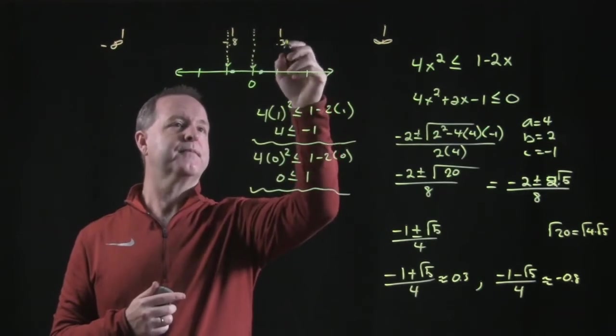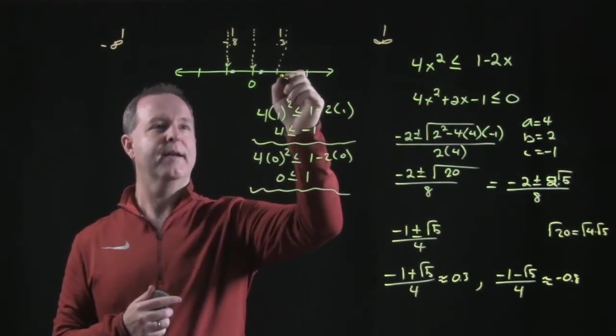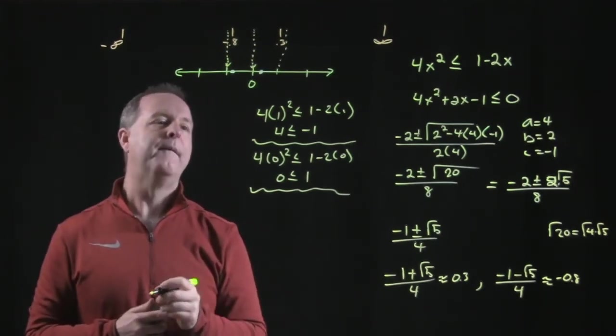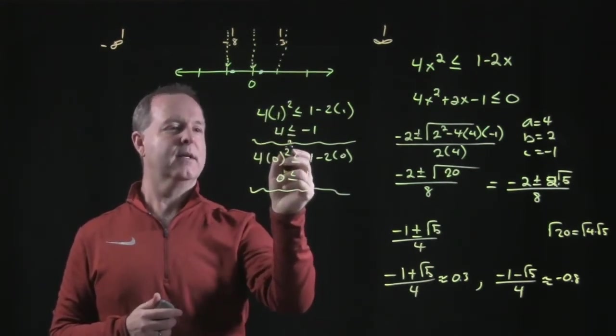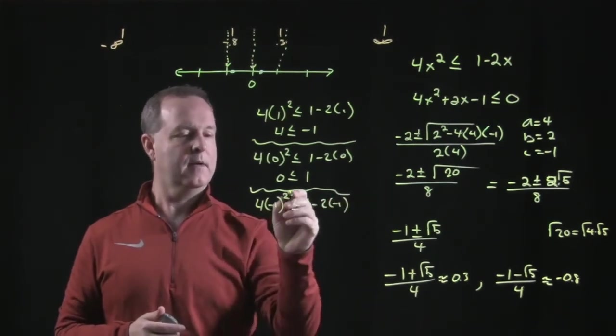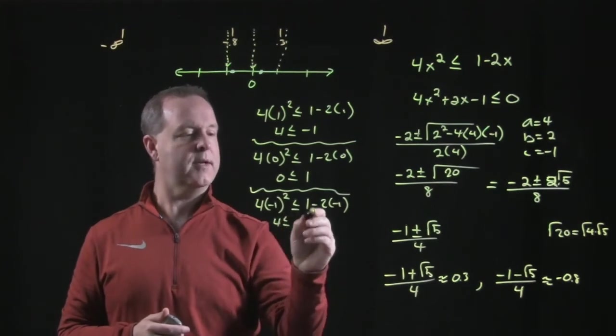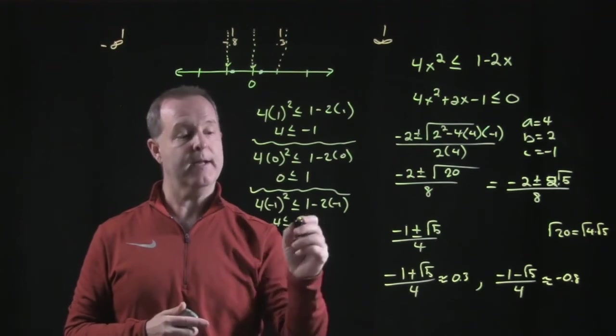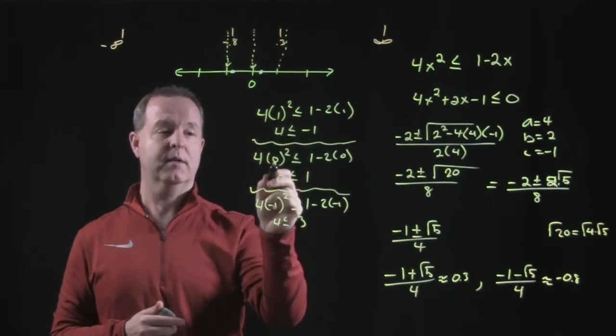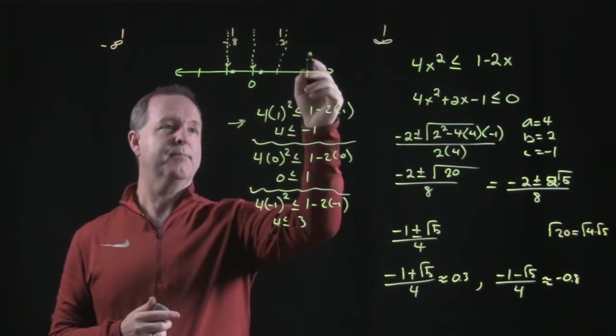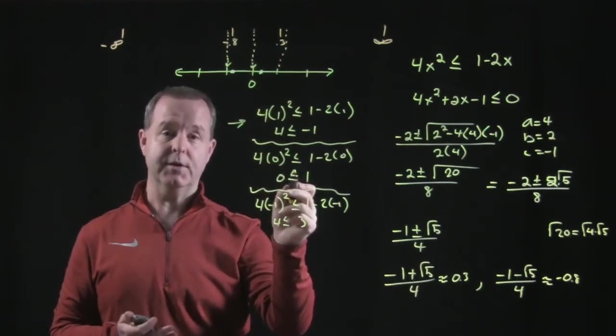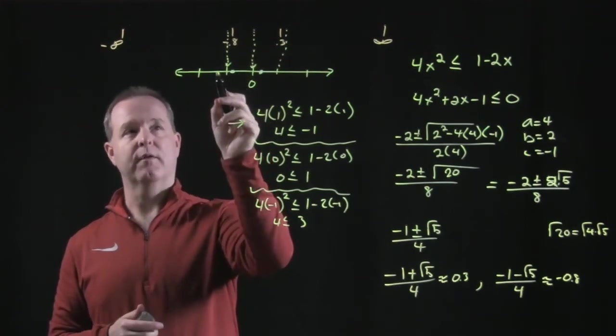So it tells me 0 is a solution, which also tells me all the points within that section are solutions. And then let's do one more test point. I guess I did 1 here earlier. I should have chose negative 1. So let's do negative 1. That's 4. Is 4 less than or equal to 1 minus a negative 2, which is 3? That is false. So the test point negative 1 is false. The test point 1 is false. So that tells me this section over here is untrue. The second section with the test point of 0 is true. And then the test point of negative 1, which is over here, is false.